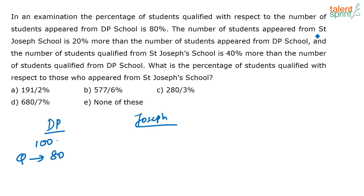The number of students appeared from St. Joseph is 20% more than the number of students who appeared from DP school. So, how many students have appeared from St. Joseph? 120 students have appeared from St. Joseph. 20% more than 100 — 20% of 100 is 20, so 20% more than 100 is 100 plus 20, that is equal to 120.